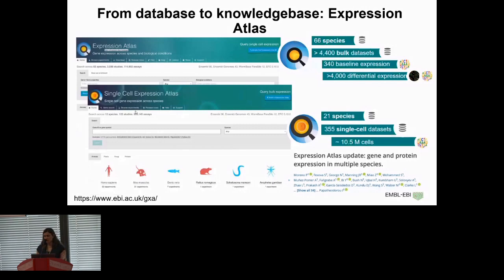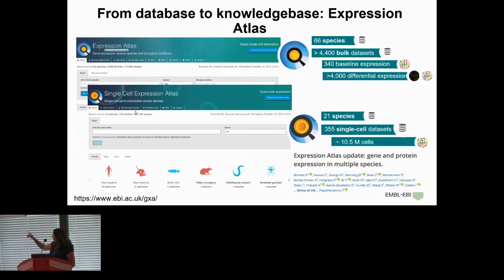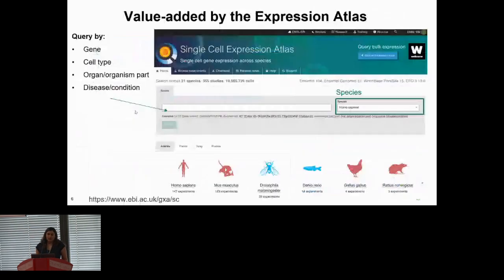The Single Cell Expression Atlas is our newest resource — it is the Expression Atlas for single cell RNA-seq data. At the moment, we have data from 21 different species: around 355 single cell datasets including about 10 million cells that have passed QC. You can read more in our latest NAR databases update paper. I'll show you a few examples of how the Single Cell Expression Atlas can be used to find information before I go into what we do to the data to bring it to the website.